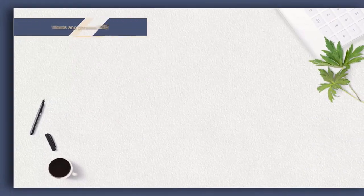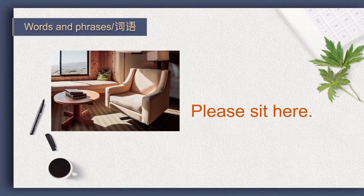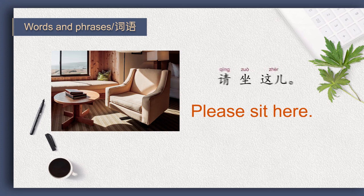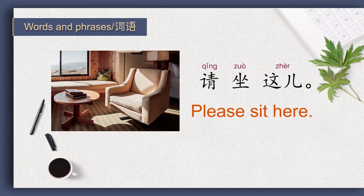How do you say 'please sit here' in Chinese? 很好，请坐这儿。 这儿 means 'here,' remember? We learned it in Lesson 3.